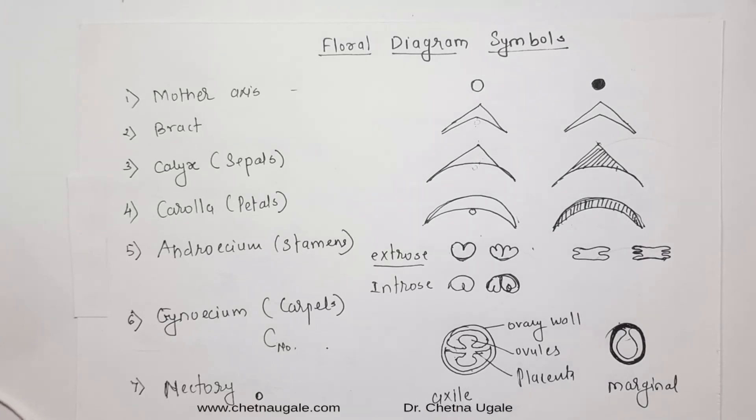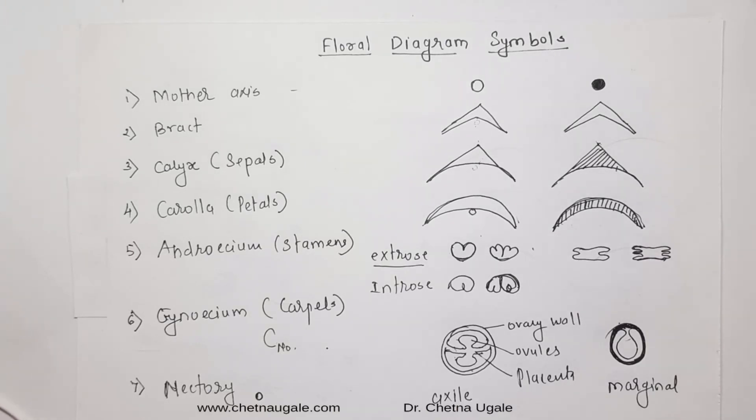Depending upon the nectary position, the nectary gland symbol is represented accordingly in the floral diagram. So these are the floral diagram symbols or signs which are used while drawing the floral diagrams of flowering plants.